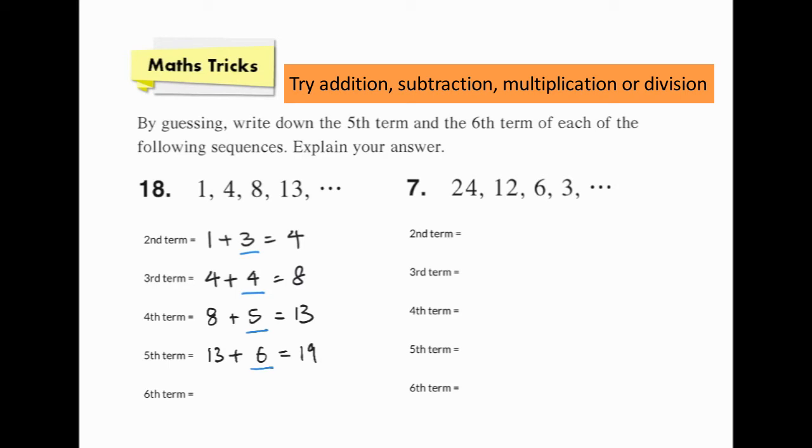Finally, the sixth term will be 19 plus 7, which is 26. That's it.